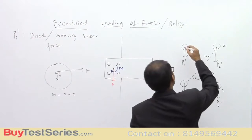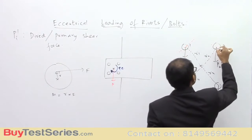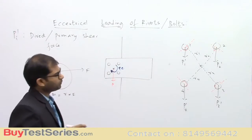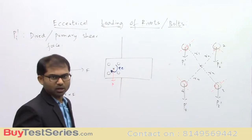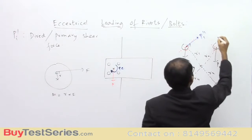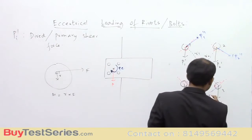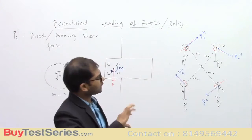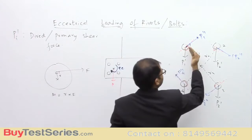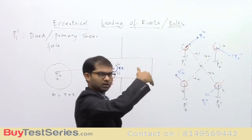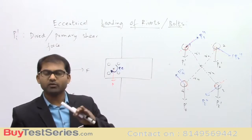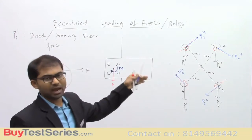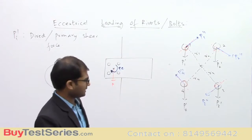The secondary forces produced by the moment are perpendicular to r1, r2, r3, r4 respectively. Drawing perpendiculars to each r, the secondary forces P1'', P2'', P3'', P4'' must be oriented so as to create a clockwise moment. If P1'' were reversed in direction, it would create an anti-clockwise moment, which we do not expect. So all secondary force directions are chosen to produce the required clockwise couple.